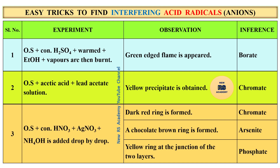The third test: original solution plus concentrated nitric acid plus silver nitrate, then add ammonium hydroxide drop by drop. If you get a dark red ring, that is chromate. If a chocolate brown ring is formed, that is arsenite. If a yellow ring appears at the junction of two layers, that is phosphate.